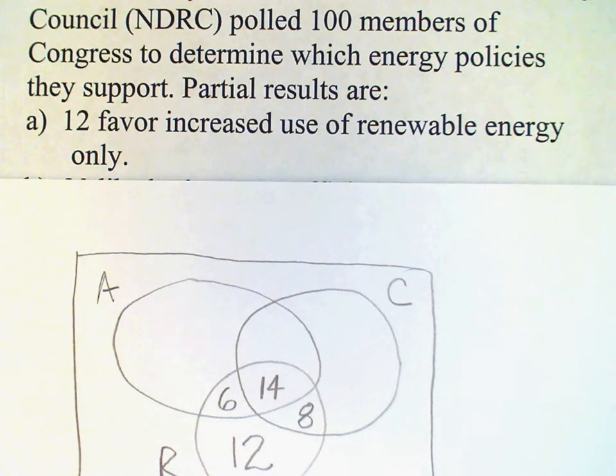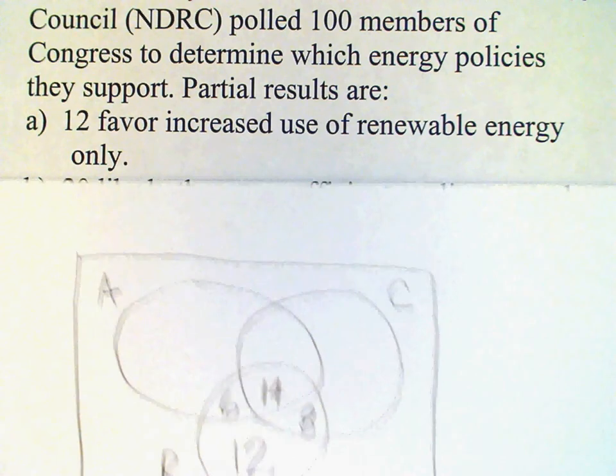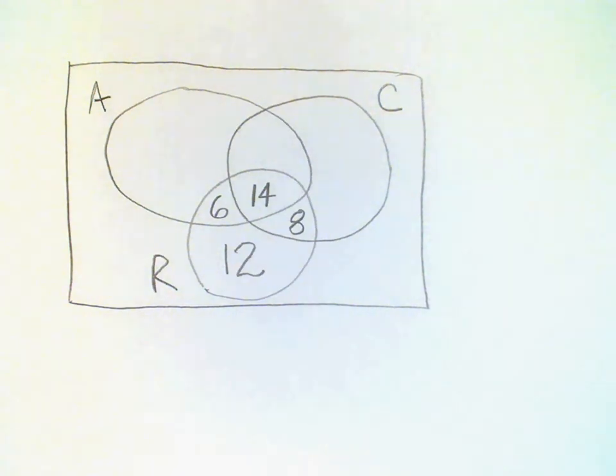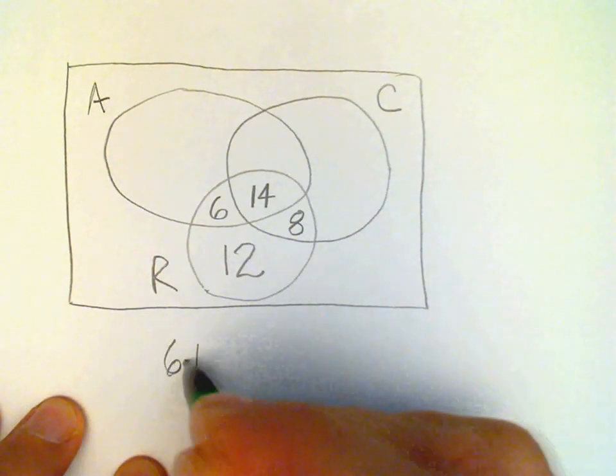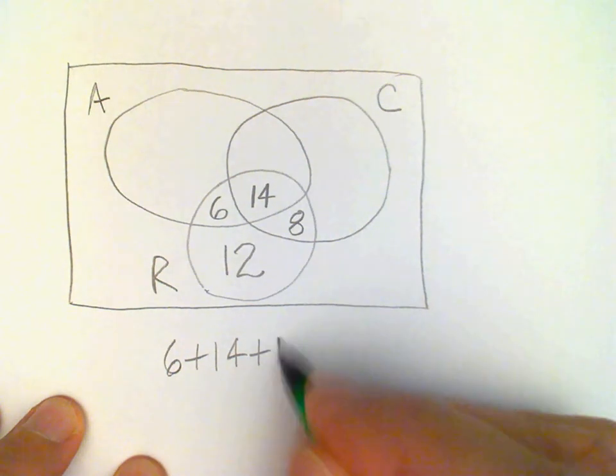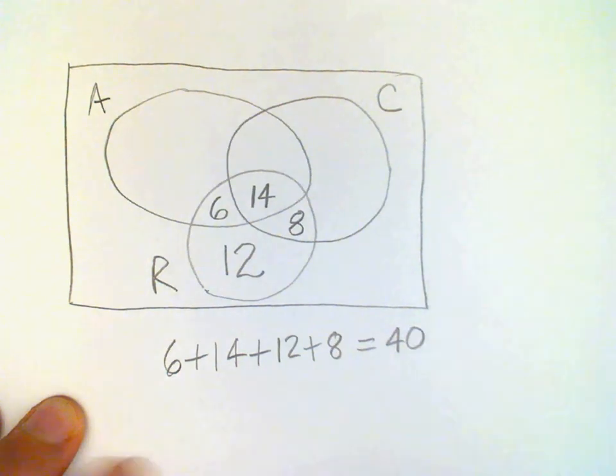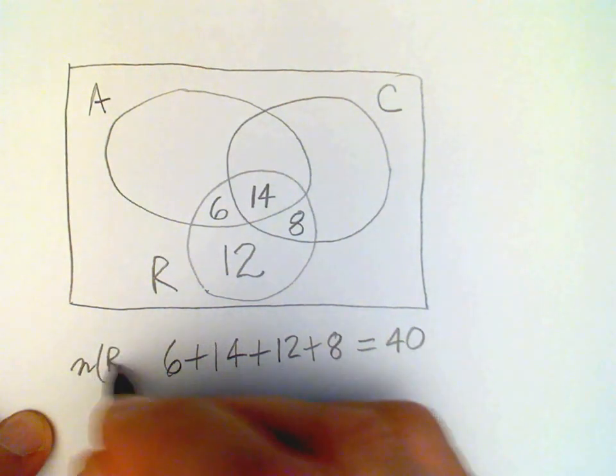This was just a partial data set that we were given, but it is sufficient to answer the question which was asked. Namely, what is the total number of people who favor renewable energy? In order to answer that question, all we need to do is add up those numbers in the disjoint regions in set R. We get 6 plus 14 plus 12 plus 8. The answer is 40.